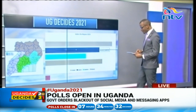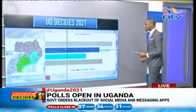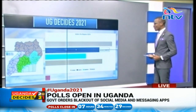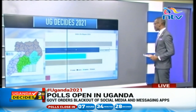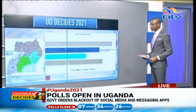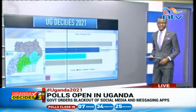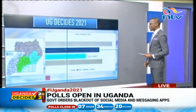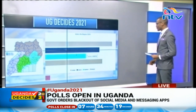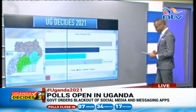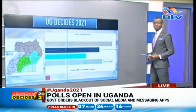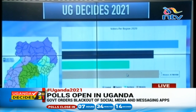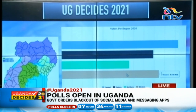The next place where we have majority voters is from the eastern part of the country, where you have 4.4 million voters casting their ballots. Then we have the northern part of Uganda where 3.2 million people will be casting their ballots, and the western part of Uganda where 4.7 million voters will be casting their ballot.